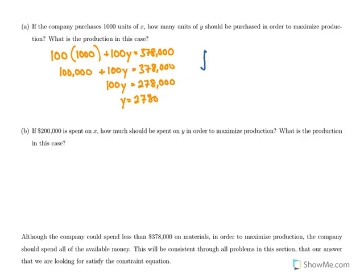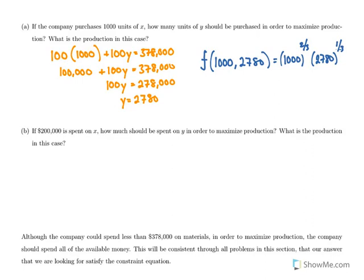The production in that case would be F(1000, 2780) = 1000^(2/3) · 2780^(1/3). Plugging this into a calculator gives a value of about 1406.1 — whatever units production is measured in. Let's do another example thinking about how much money is spent rather than units. If we spend $200,000 on X, how much should we spend on Y to maximize production? Well, there's $378,000 total, so we should spend $178,000 on Y.